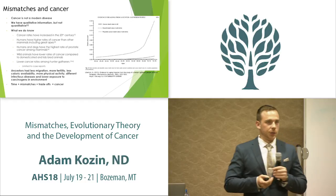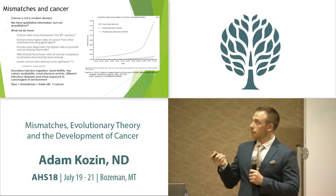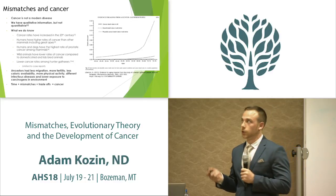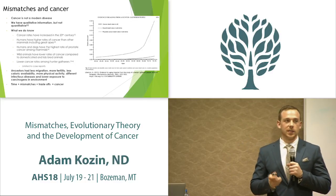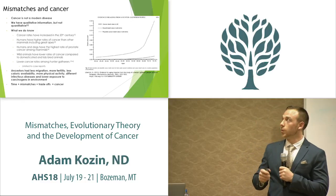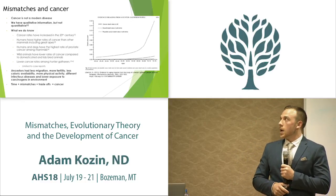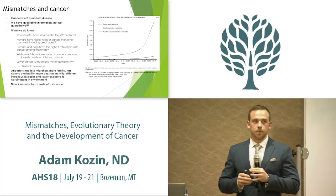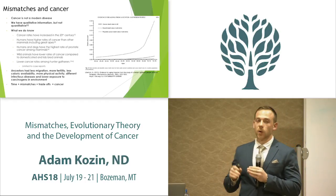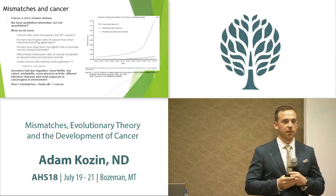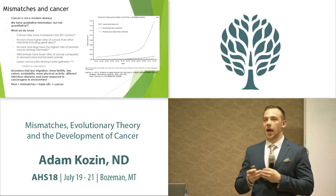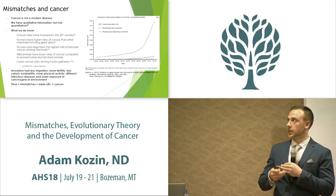This brings us to mismatches in cancer. Cancer is not a modern disease — a paper published in June 2018 found 274 incidences of cancer in the fossil record dating back up to 2 million years ago. We know cancer is not modern, but cancer rates continue to climb in the 20th century. We have to look at our past to guide our future, because we know that hunter-gatherer populations had lower incidences of cancer.